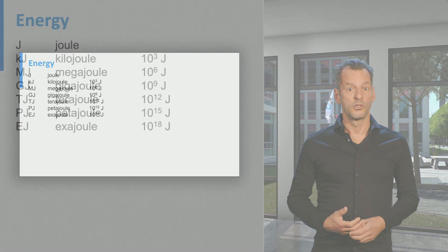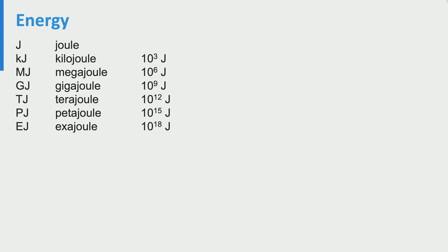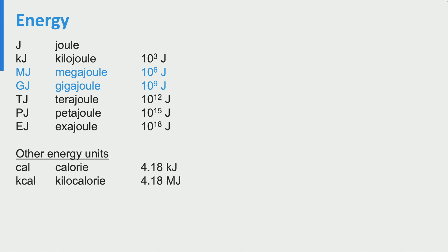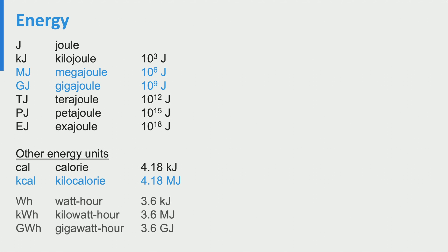The unit for energy is joule. Other magnitudes of energy are expressed by kilojoule, megajoule, gigajoule, terajoule, petajoule and exajoule — the largest order of magnitude on planet Earth. When looking at buildings, megajoules and gigajoules are the units most used. Other units used for energy are calorie or kilocalorie, the latter being what you usually see on the wraps of food. An energy unit commonly used for electricity is watt-hour, kilowatt-hour or gigawatt-hour. Kilowatt-hour is the common unit for electricity use in buildings.